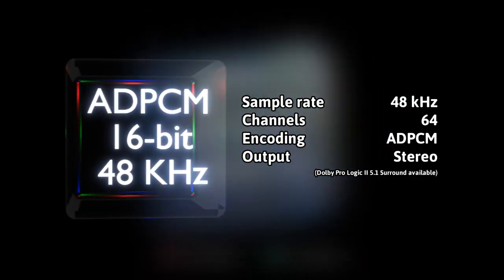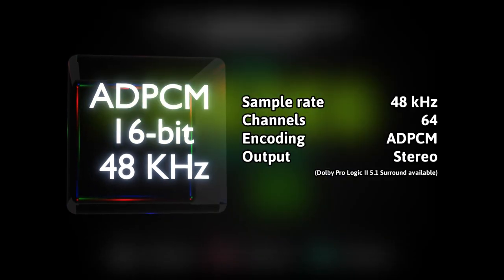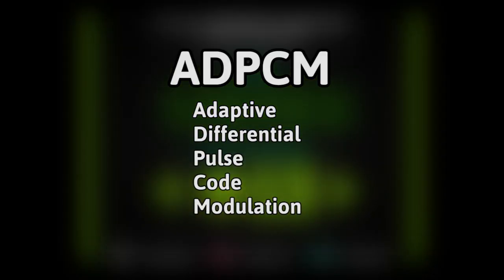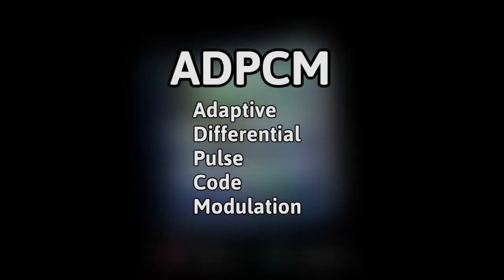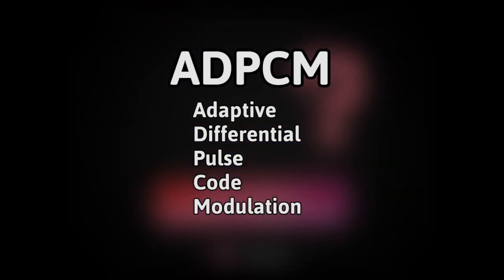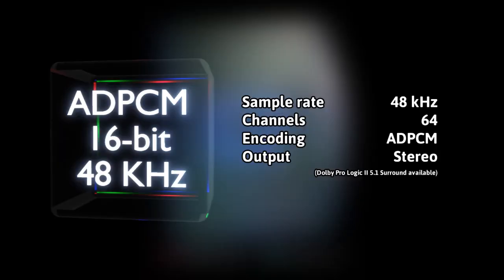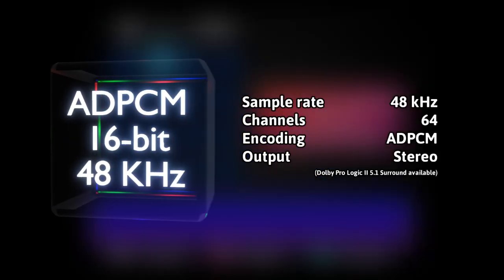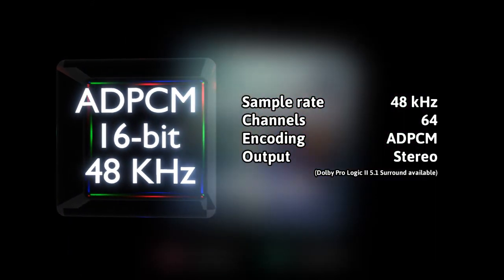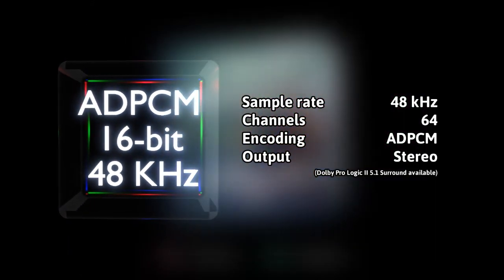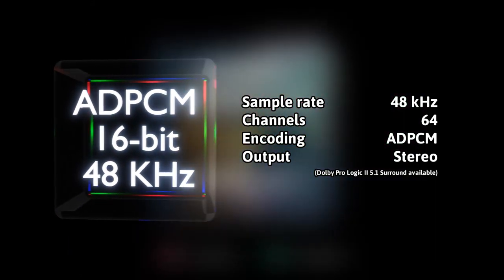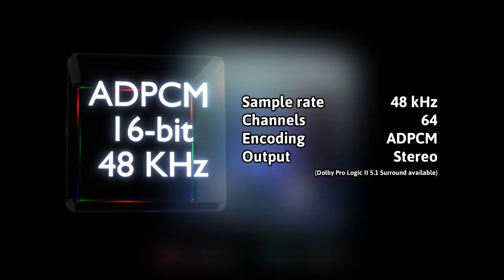ADPCM stands for Adaptive Differential Pulse Code Modulation, and it's a fast and simple compression algorithm for audio. The audio chip supports up to 64 channels and runs at 81MHz with 16MB of RAM available to it.